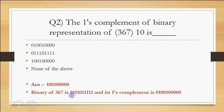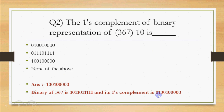Finally, the binary of 367 is: 1, 0, 1, 1, 0, 1, 1, 1, 1, 1, 1. Now for the 1's complement: wherever there is a 0, it becomes 1, and wherever there is a 1, it becomes 0. So after changing all bits, I will have the complemented values.